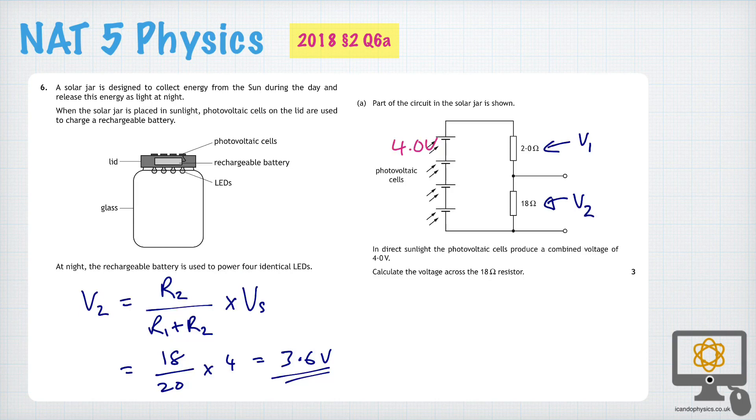However, another very common method is to determine first of all the current in the circuit. So you would use I is equal to V supply over R total and that would be 4 over 20. And that would give you a current of 0.2 amps.